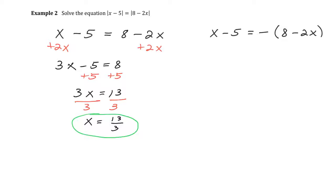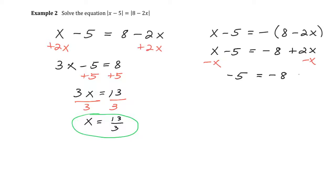For the second equation, X minus 5 equals negative of (8 minus 2X). Distributing the negative gives X minus 5 equals negative 8 plus 2X. Subtracting X from both sides gives negative 5 on the left and negative 8 plus X on the right. Adding 8 to both sides gives X equals 3. Both X equals 3 and X equals 13 thirds should be solutions.